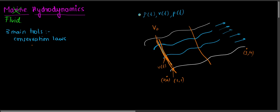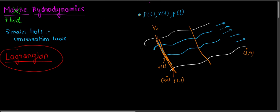These two methods were given by two really amazing scientists. The first method — considering each and every particle as a single entity and analyzing its motion — is known as the Lagrangian method, given by Lagrange. The second, computationally more practical method is called the Eulerian method, given by the great scientist Euler.